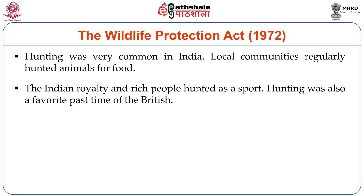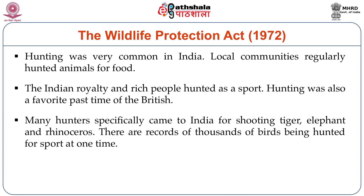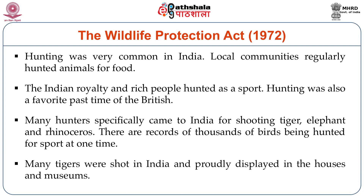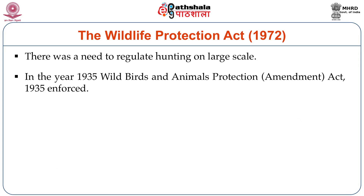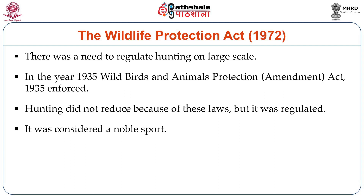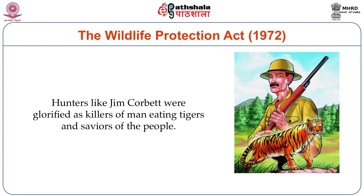Local communities regularly hunted for food. The Indian kings and rich people hunted as sport, and hunting was a favourite pastime of the British. Many hunters came to India specifically for shooting tigers, elephants and rhinoceros. Records show thousands of birds were killed for sport at one time, and many tigers were shot with their skins and heads proudly displayed in houses and museums. There was a need to regulate hunting on such a large scale. The Wild Birds and Animals Protection Amendment Act of 1935 was enforced, regulating but not eliminating hunting. Hunters like Jim Corbett were glorified as killers of man-eating tigers and saviours of people.